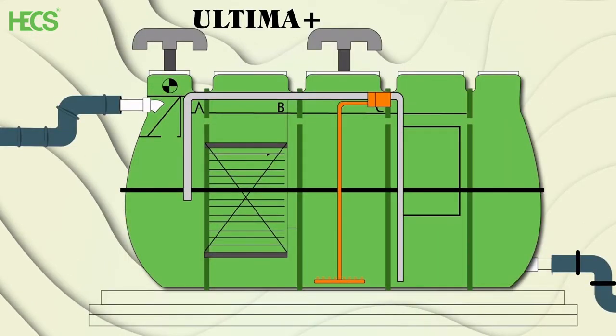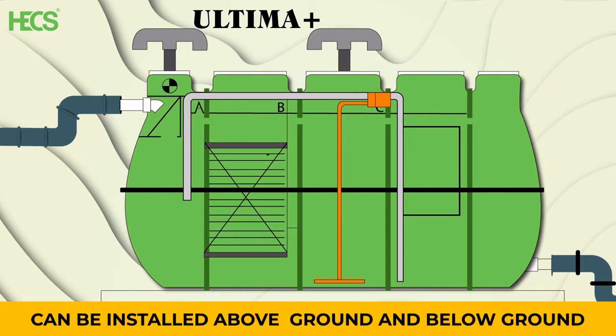The sewage generated is pumped from the collection tank into HEX Ultima Plus Smart Package Sewage Treatment Plant, which can be installed either below ground or above ground.